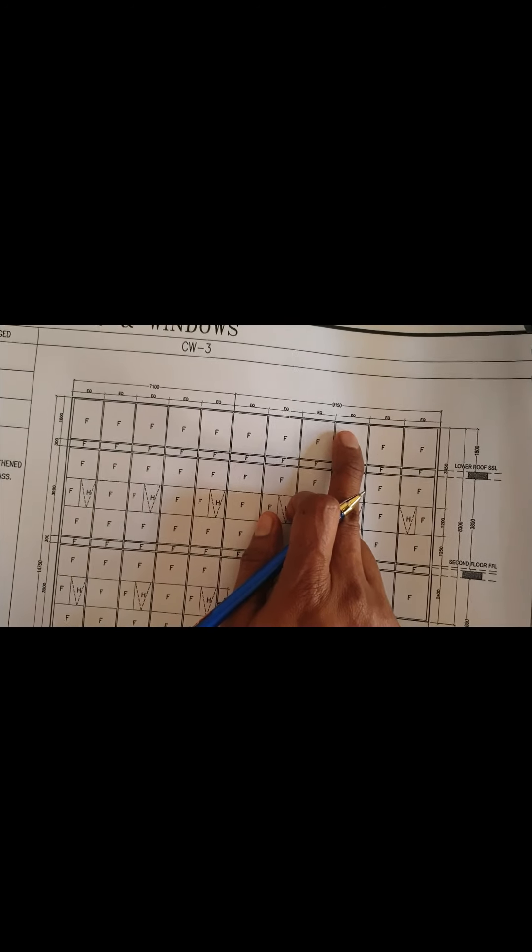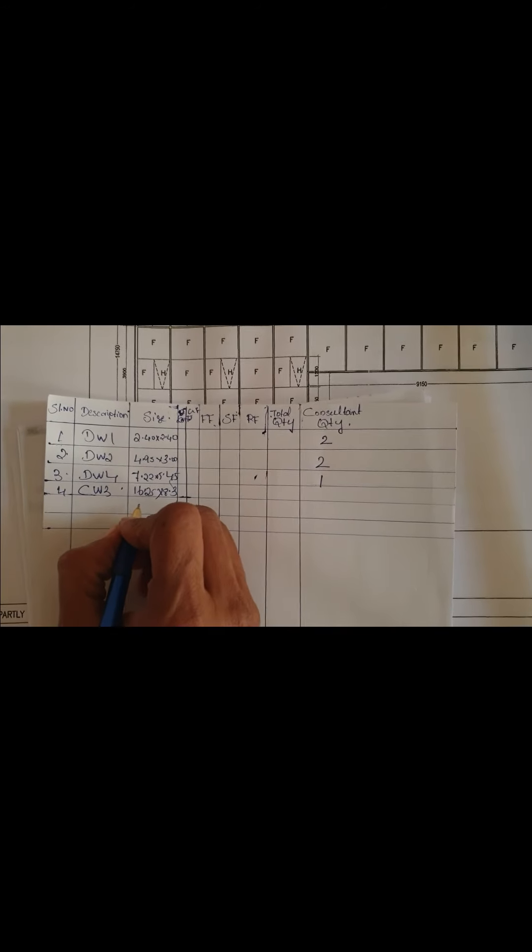The width is 7.1 plus 9.15, which equals 16.25 metres. The height we have to write is up to where it is coming — 8.3 metres. So the size is 16.25 by 8.3 metres. If you are doing this in Excel I will show you next, but just for explaining I am writing on paper.